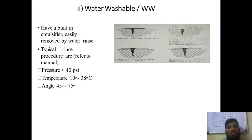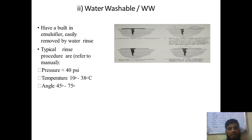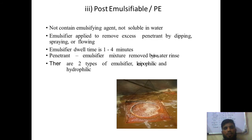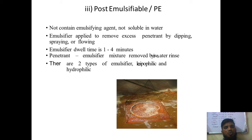Water washable penetrants, as the name suggests, can be easily washed using water. Once you apply the penetrant on the surface, if you want to clean it, you can directly clean it using a water-dipped cloth or a brush dipped in water. Post-emulsifying penetrants do not contain an emulsifying agent and are not soluble in water — an emulsifier is applied to remove the excess penetrant by dipping, spraying, or flowing.